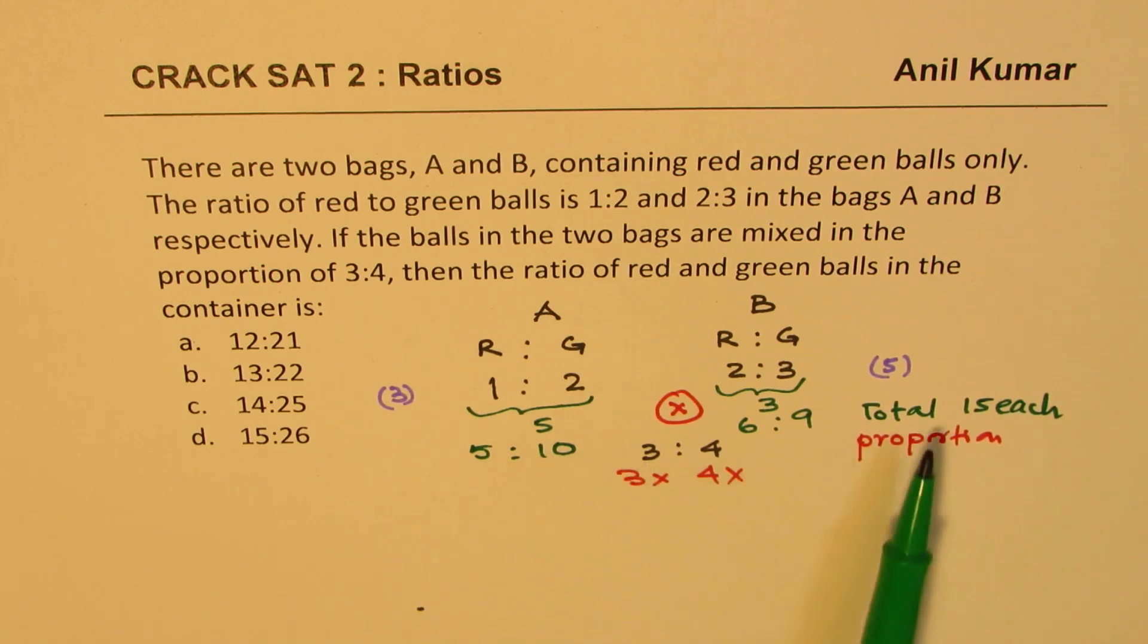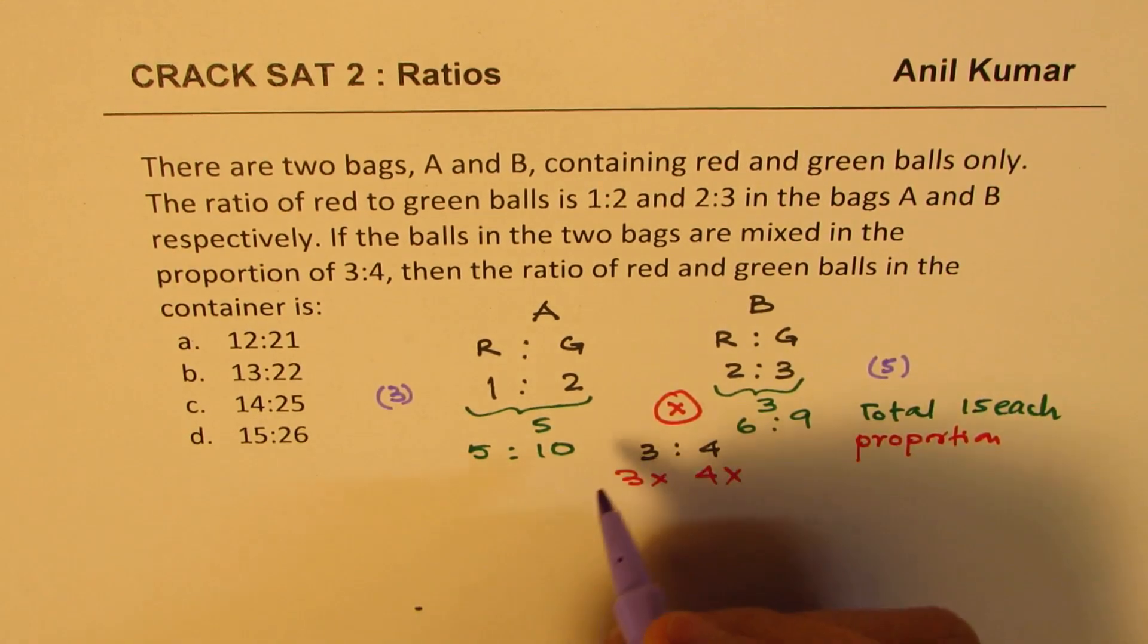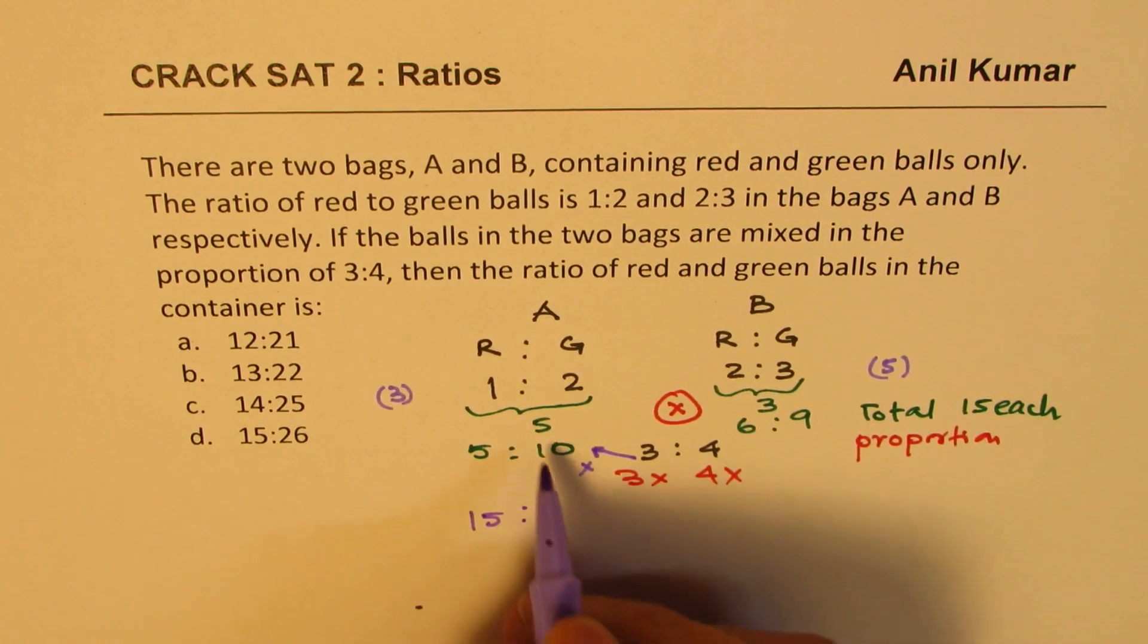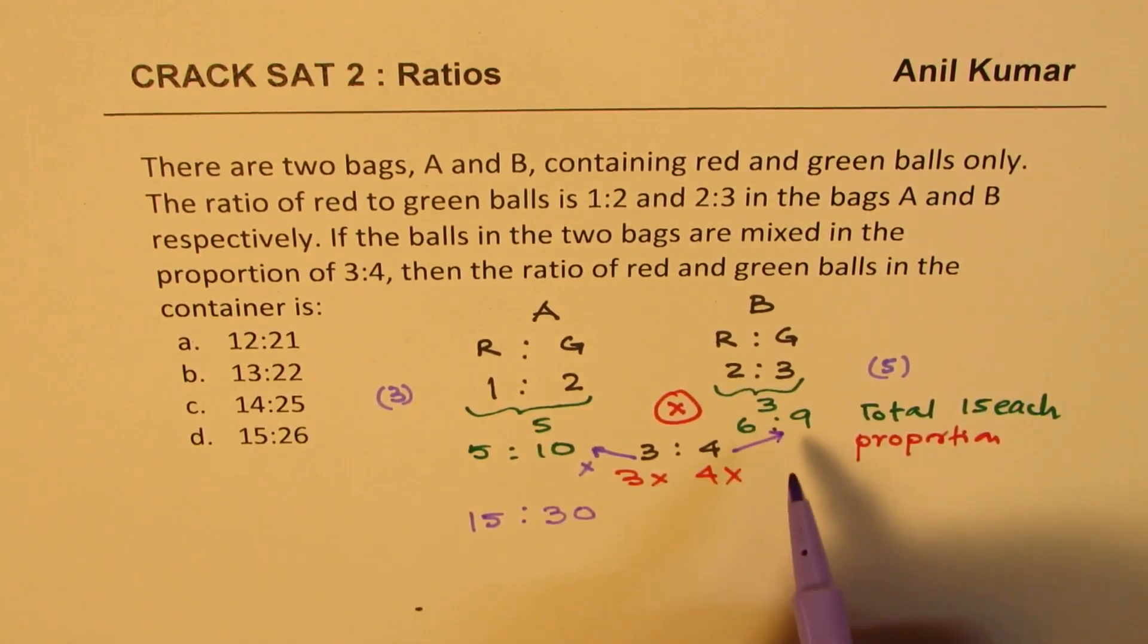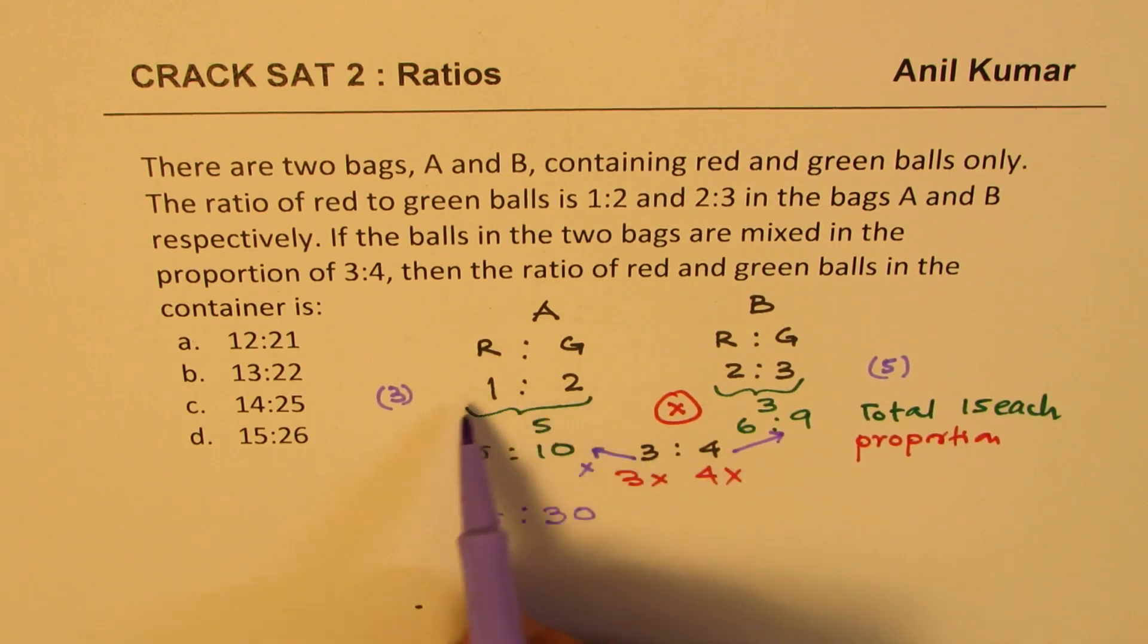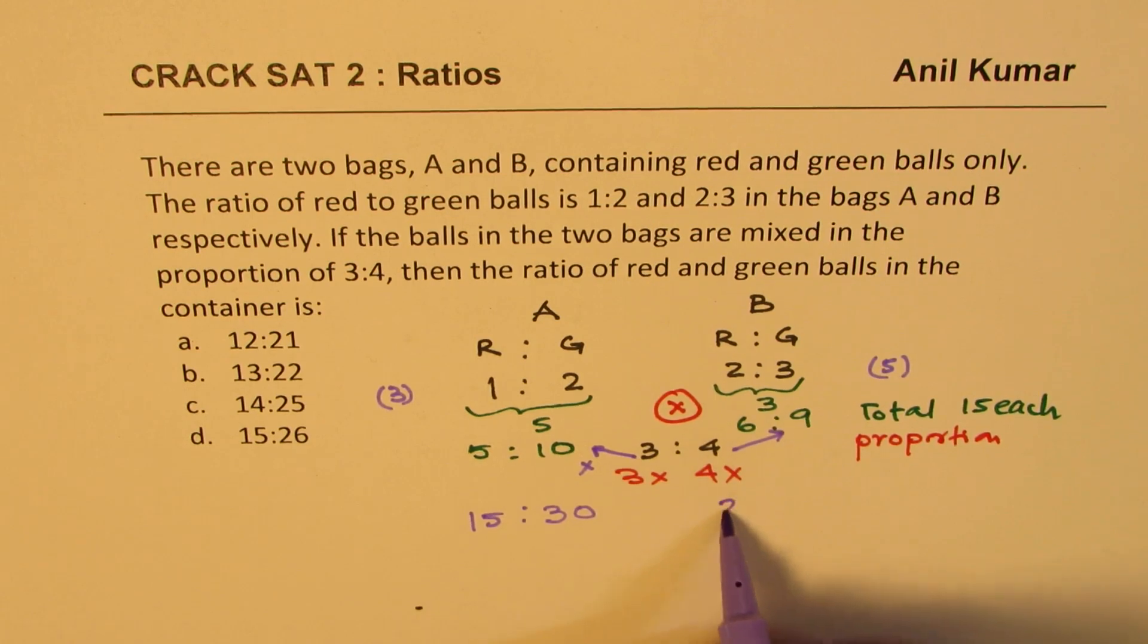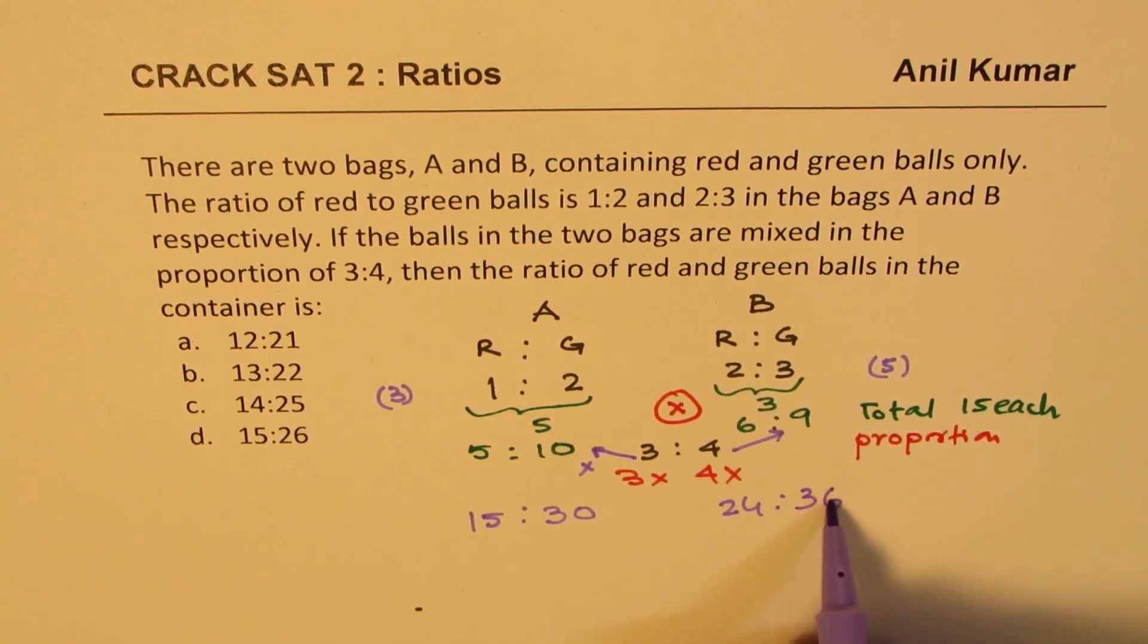We need to get 3 of this kind and 4 of that kind. So if I multiply this by 3, then what do we get? 3 times 5 is 15 and the green balls will be 30. If I multiply this by 4, since we are picking 3 of these sets, 4 of these sets, 4 times 6 will be 24 and 4 times 9 will be 36.